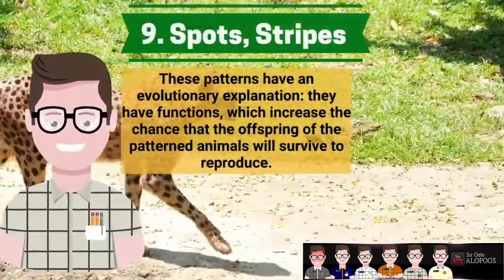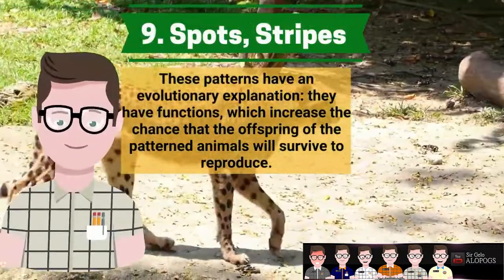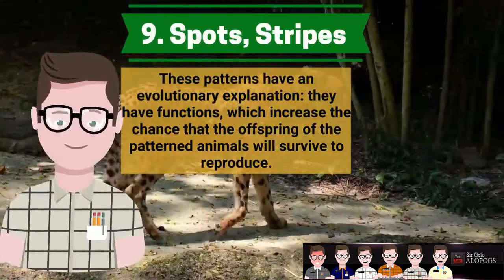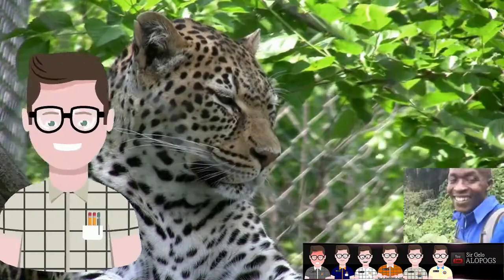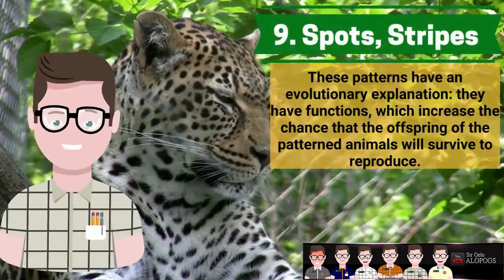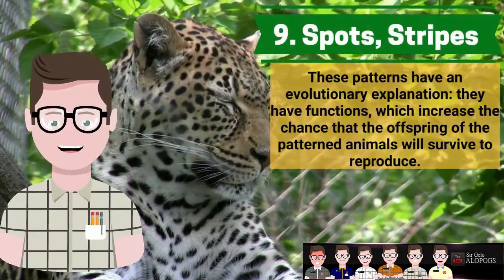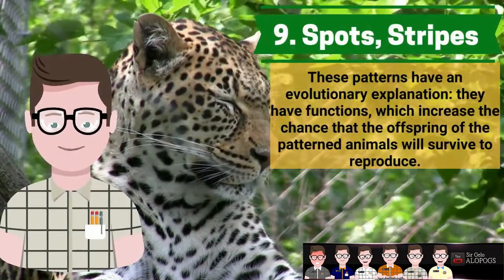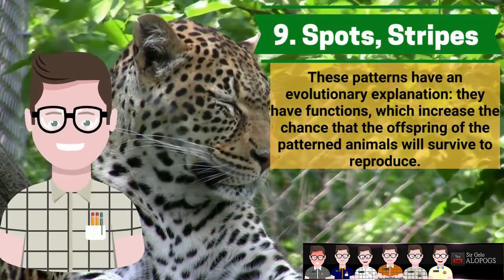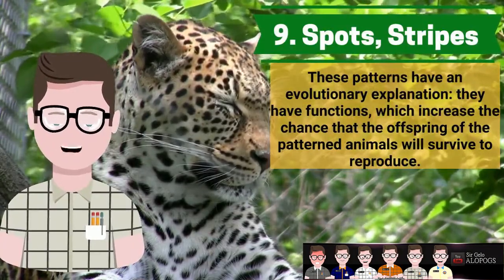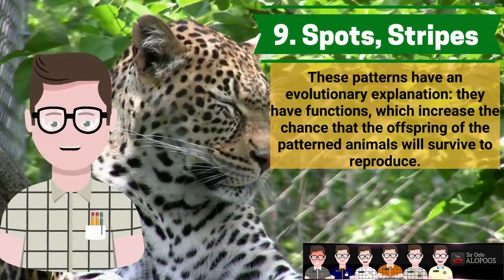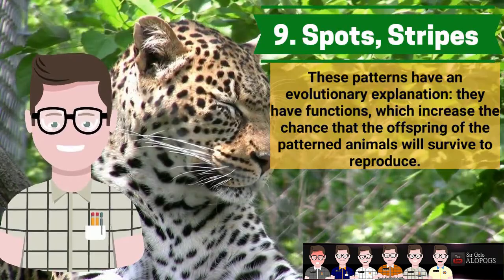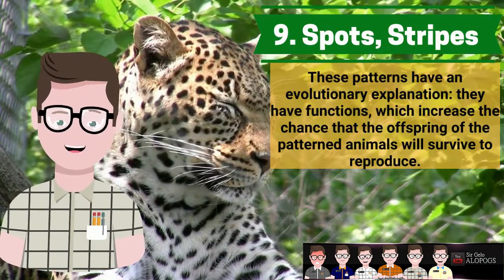The two classic patterns are stripes and spots. Both patterns are created by wave-like structures in chemistry. Long parallel waves produce stripes, while a second system of waves at an angle to the first can cause the stripes to break up into a series of spots. Examples of stripes include the tiger and zebra, while examples of spots include the cheetah and leopard.